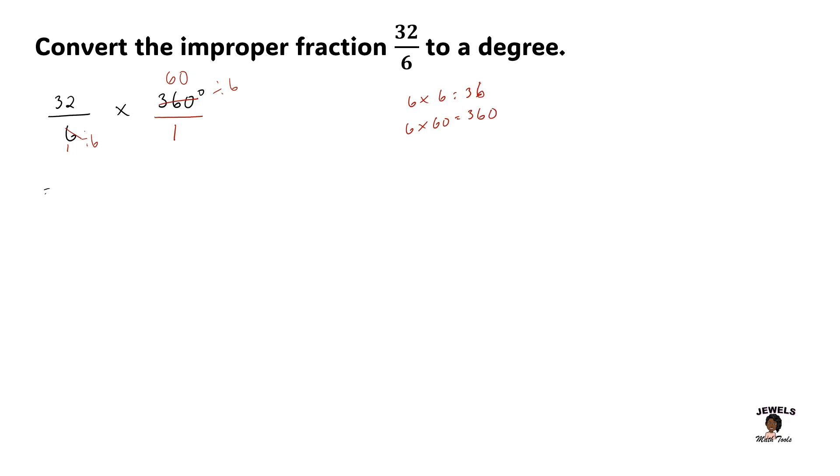Now let's rewrite our numbers. We now have 32 over 1 and we have 60 over 1, remembering that this simply means we have 32 times 60. So let's perform our long multiplication.